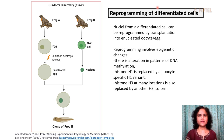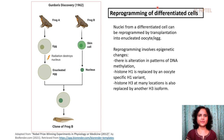This reprogramming involves many epigenetic changes. For example, there is alteration in patterns of DNA methylation, and also the histone H1, the linker histone, is replaced by an oocyte-specific H1 variant, and the histone H3 at many locations in the chromatin is also replaced by another H3 isoform.